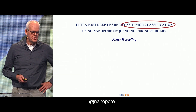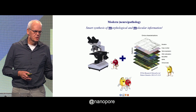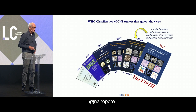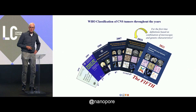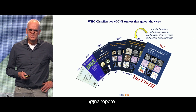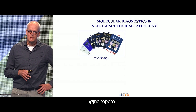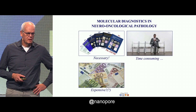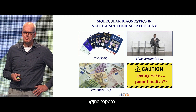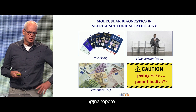CNS tumor classification — a few words on that. It's very clear that nowadays neuro-oncological pathology is about a combination of microscopy and molecular information, the M&M approach, you could say. Already in 2016, part of the definitions in the classification were based on genetic or molecular features, and many more tumors are now defined based on their genetic features in the 2021 classification. So it's really necessary to perform molecular diagnostics. Some drawbacks are that it's time consuming and expensive. But you can be penny wise and pound foolish in that respect, because you can deal with a patient much better when you know precisely what kind of tumor it is.